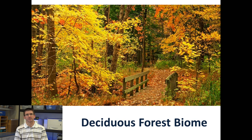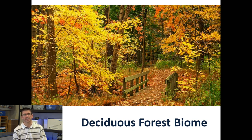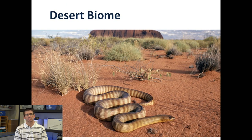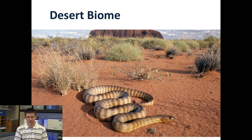The deciduous forest biome, which we call seasonal forests. They experience all four seasons — the leaves fall off the trees in the wintertime and regrow in the spring. The desert biome, which is Earth's driest biome. A lot of people think of deserts as being sandy and hot, but that's not always the case, as we'll discuss later.